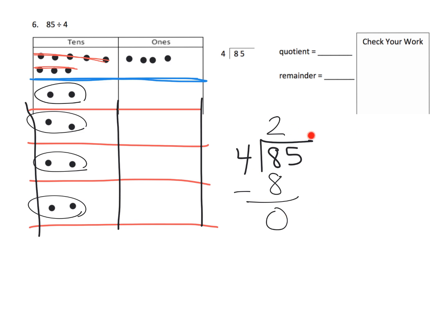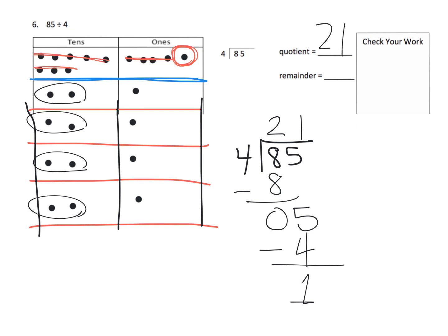In the standard algorithm, now we're looking at 5 ones. We have 85 divided by 4, so we have 5 ones to put amongst the 4 groups: 1, 2, 3, 4. We're not using all of them — we used those 4 but we have 1 left over. In the standard algorithm: 5 ones sorted amongst 4 groups means 1 goes in each group. We used up 4 and have 1 left over. So our quotient is 21 remainder 1, written as 21 remainder 1.